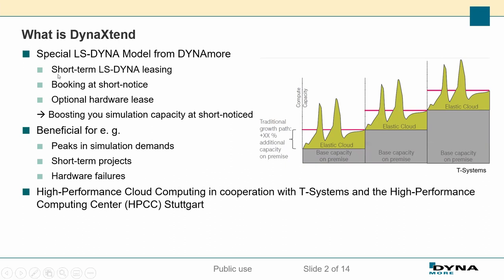The idea was to compensate for simulation peaks which may happen. You have your base capacity for simulations, and then you have some projects. Maybe you even have a server loss or a breakdown of servers — you cannot run as many simulations as you need. Then on a short-term basis, you need to increase simulation capabilities in your company. This is exactly what Dyna Xtend is for: peaking simulation demands, short-term projects, or even in the worst case, a hardware failure that needs to be compensated.